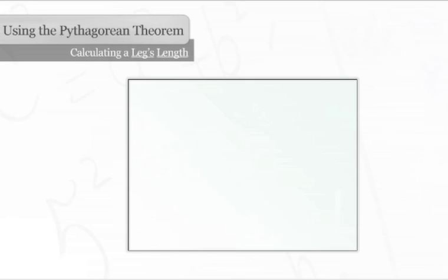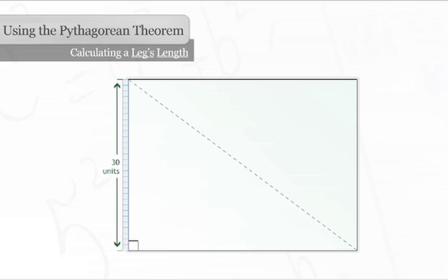Now let us examine situations where the hypotenuse is known and we need to find the length of one of the legs. Here is a rectangle where the length of one side is thirty units long and the diagonal is fifty units long.